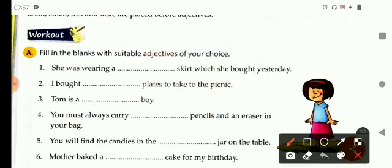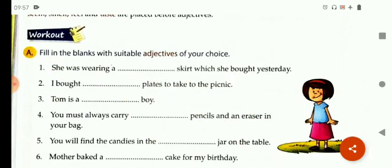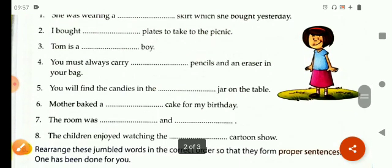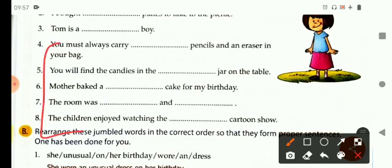And in sentence number two, I bought dash plates to take to the picnic. Here, you can write four plates or new plates or it can be paper plates also. Now, in this way, you can complete rest of the sentences by using adjectives of your choice.